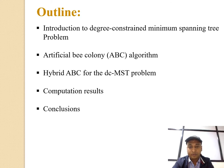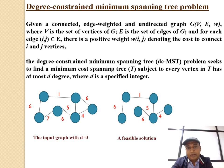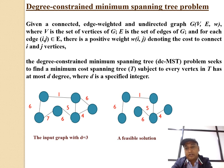This is the outline of our work: Introduction to the Degree Constrained Minimum Spanning Tree (DCMST) Problem where D is a specified integer, the Artificial Bee Colony algorithm, Hybrid ABC for the DCMST problem, and Computational Results. Given a connected, weighted and undirected graph, this problem aims to find a minimum cost spanning tree subject to the condition that every vertex in this tree has at most D degree, where D is a specified integer.